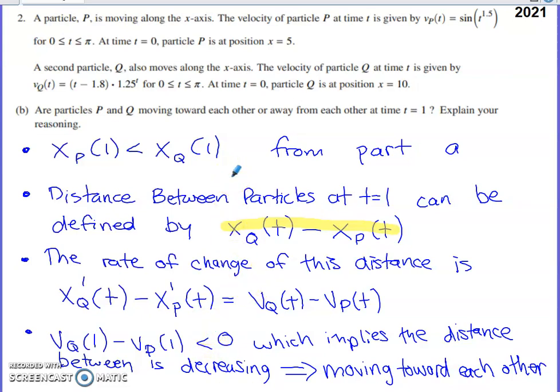So you can check to see if that rate of change is positive or negative on the calculator. I've determined that it's negative. And that's going to imply that the distance between the particles is decreasing. And that's going to mean that they've got to be moving toward each other at time one.